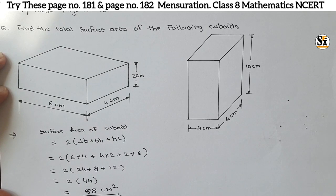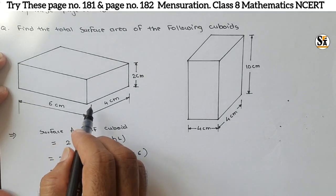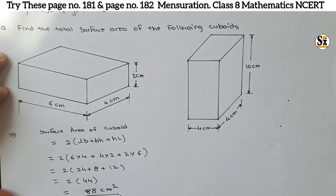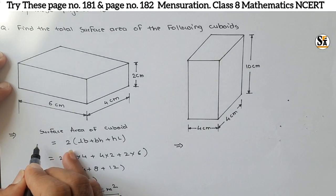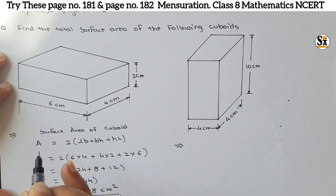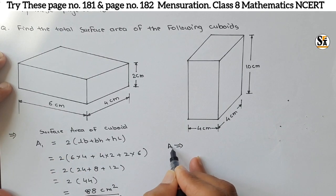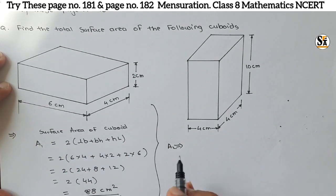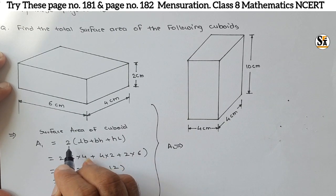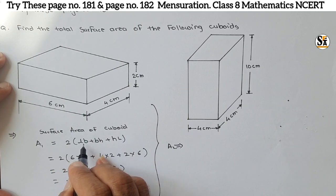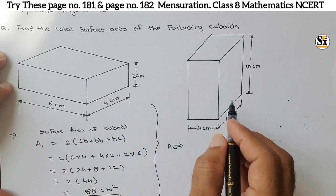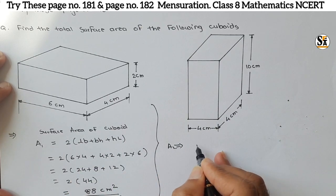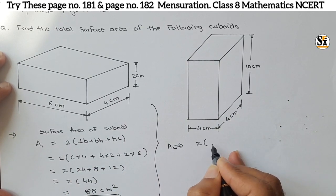This is the answer for the first cuboid. Now for the second cuboid, the formula is again the same: surface area A2 = 2 into bracket lb plus bh plus hl. Put the values of l, b, and h for this figure.